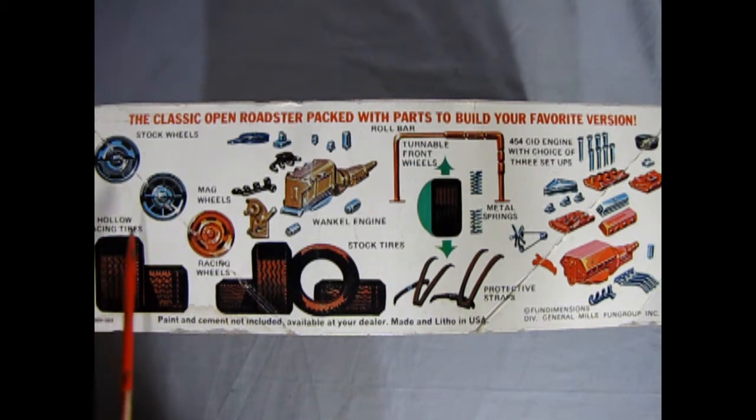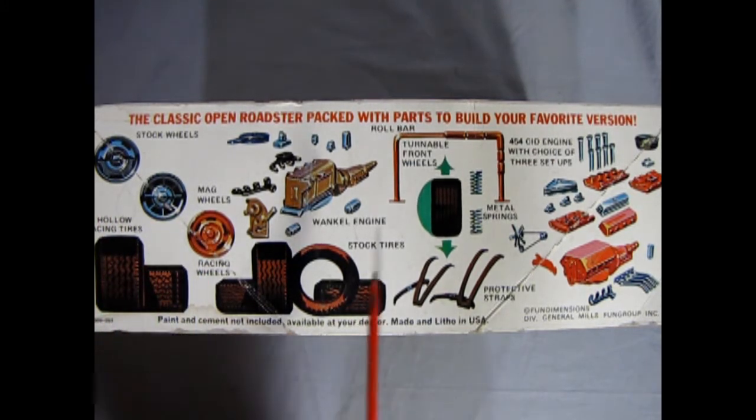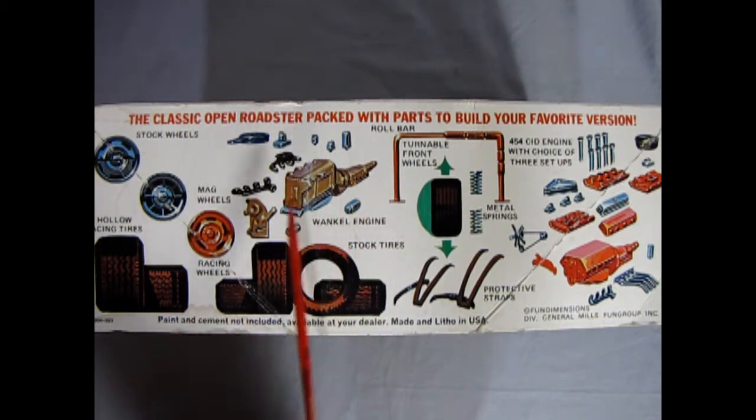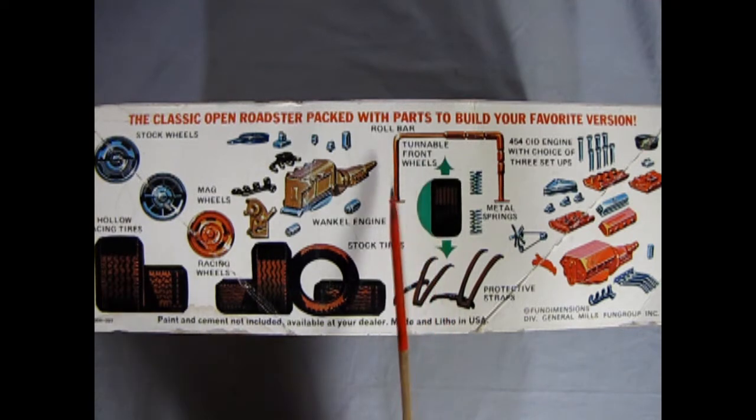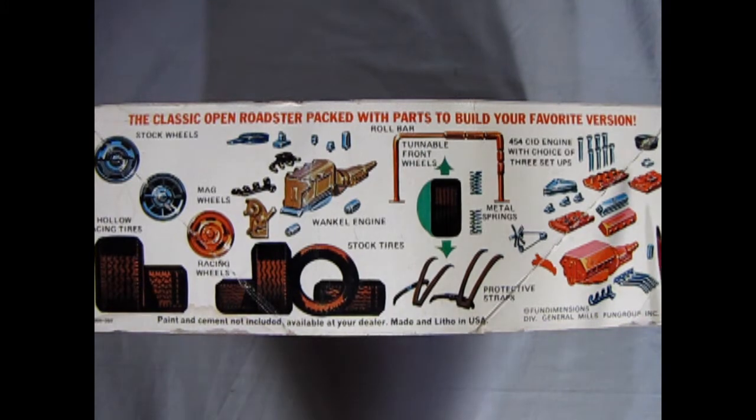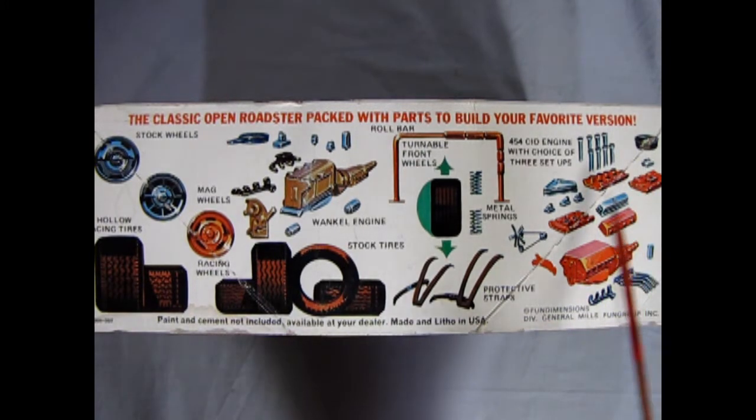The classic Open Roadster packed with parts to build your favorite version. Look at all these parts: stock wheels, mag wheels, racing wheels, hollow racing tires, a Wankel rotary engine, posable front wheels, a roll bar, metal springs, protective straps which are your seat belts, and a multi-piece drag racing motor as well.